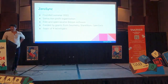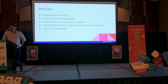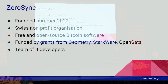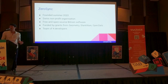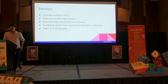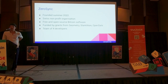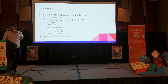About the ZeroSync project: ZeroSync was founded last summer, and we are a Swiss non-profit organization building free and open-source Bitcoin software. In general, we are focused on applying cutting-edge cryptography to Bitcoin to advance Bitcoin. We are funded by grants from Geometry Research, Starkware gave us a grant, and OpenSats gave us a grant. We have a team of four people, and we're working on our roadmap.